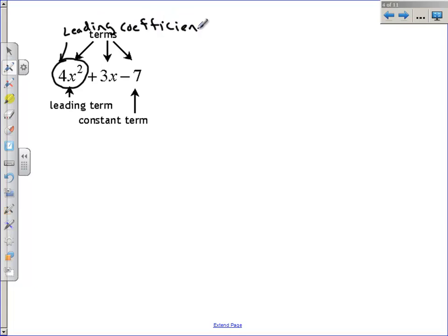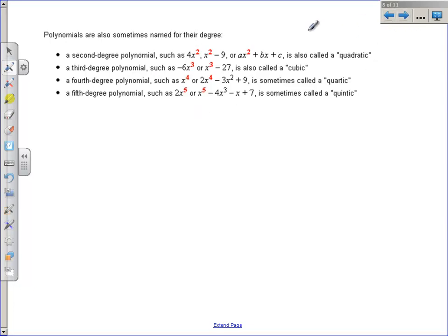And the last number that typically has an x to the 0 on it, we hide that because anything to the 0 is a 1. The last term is called the constant term.